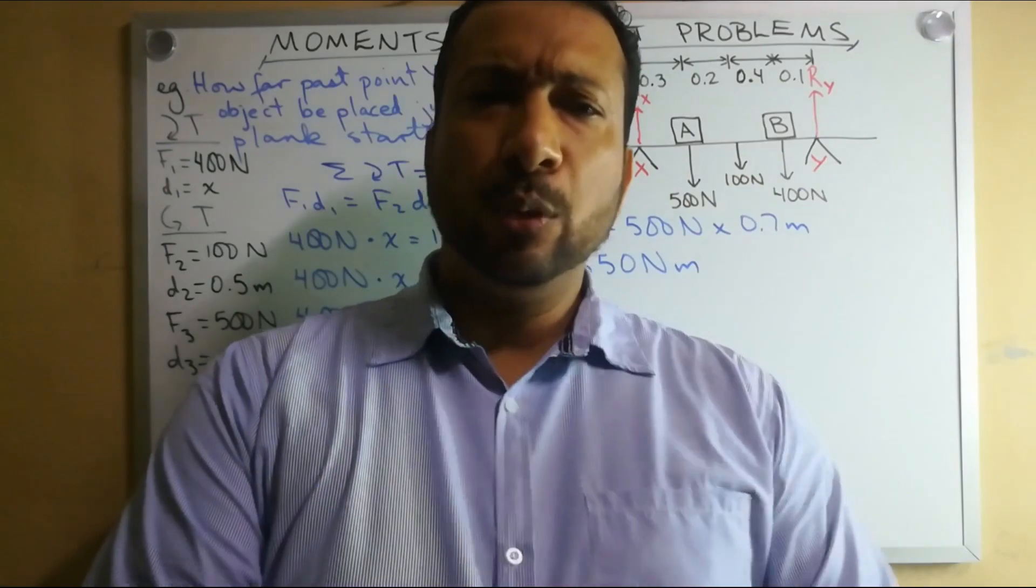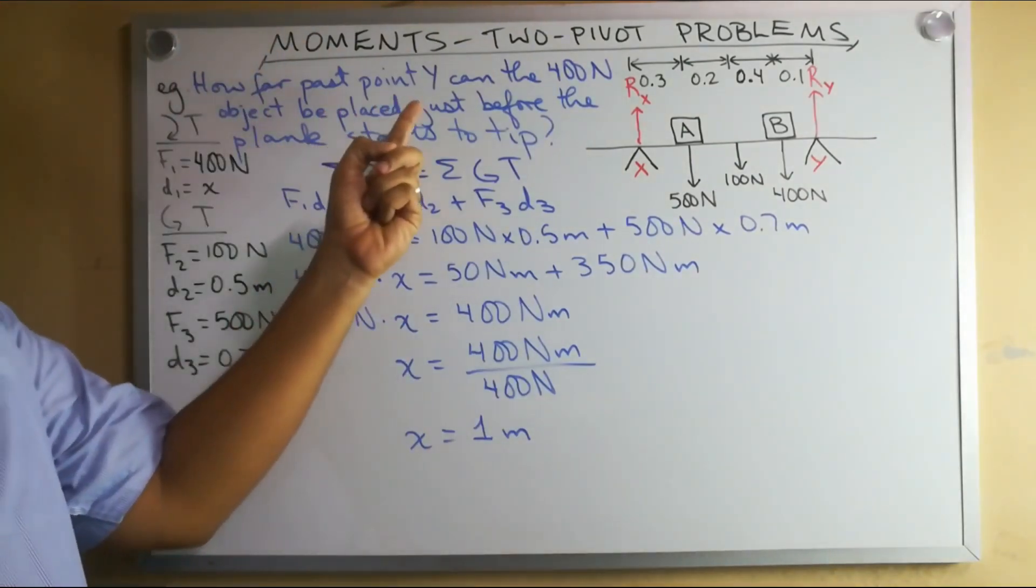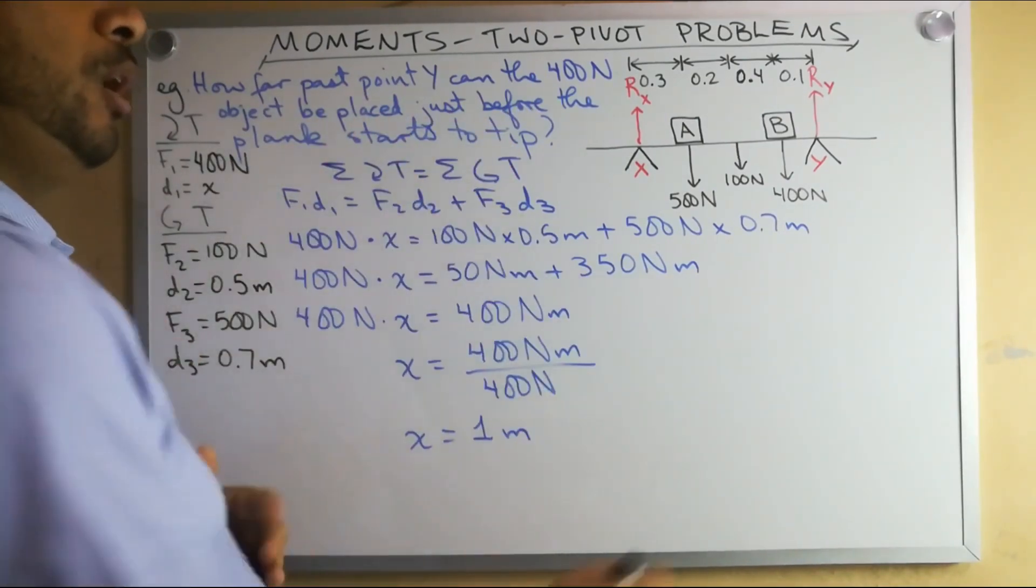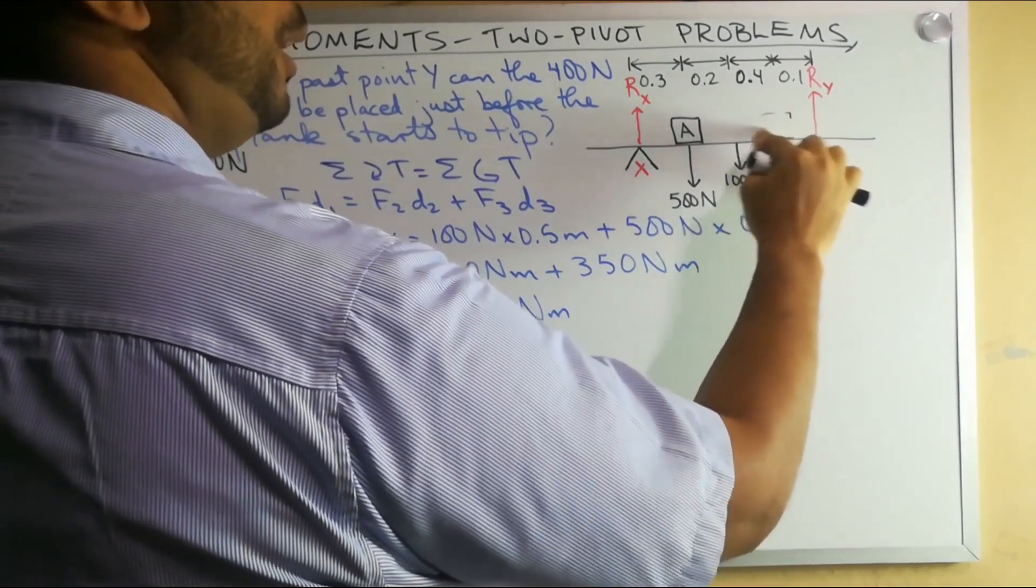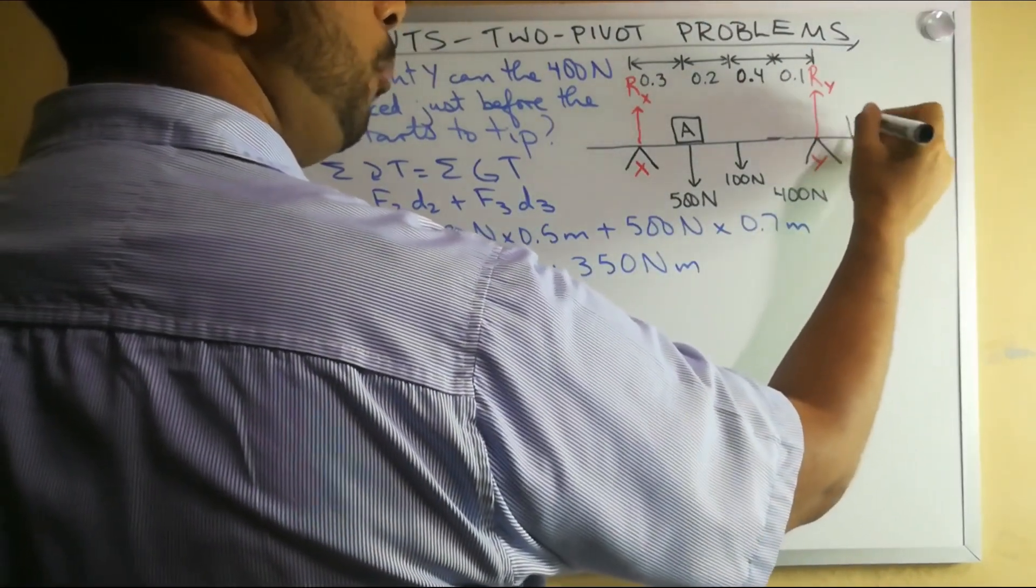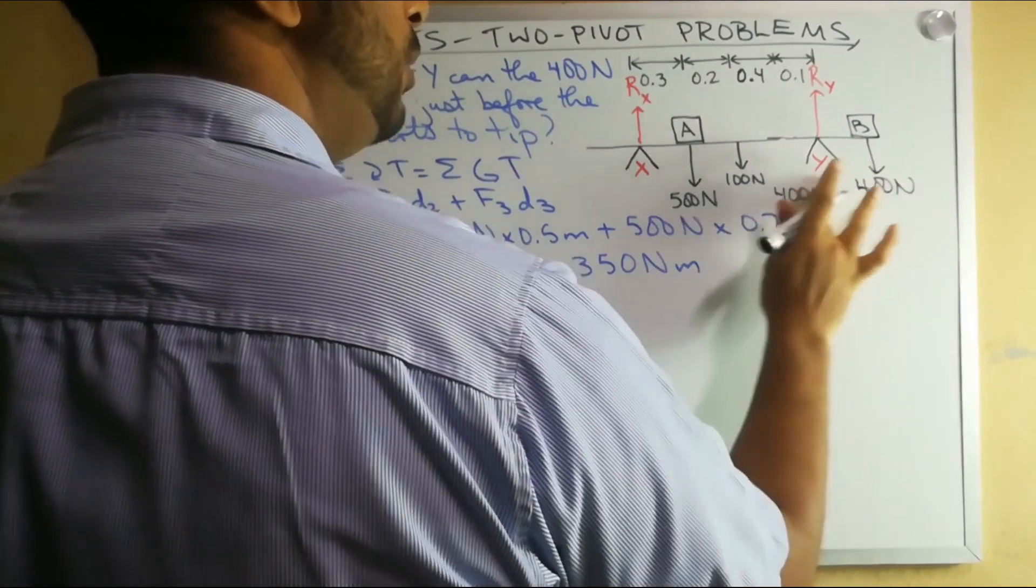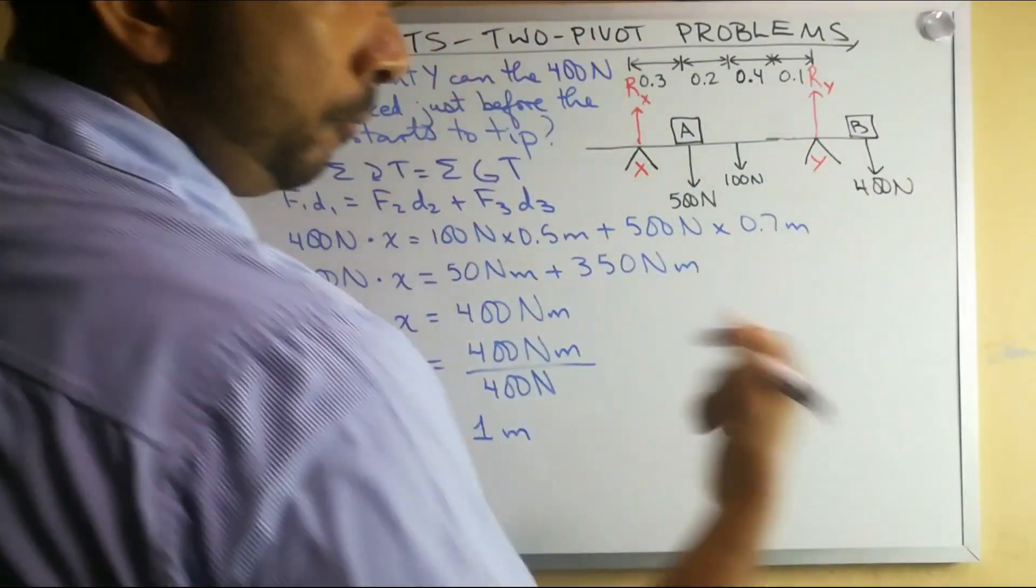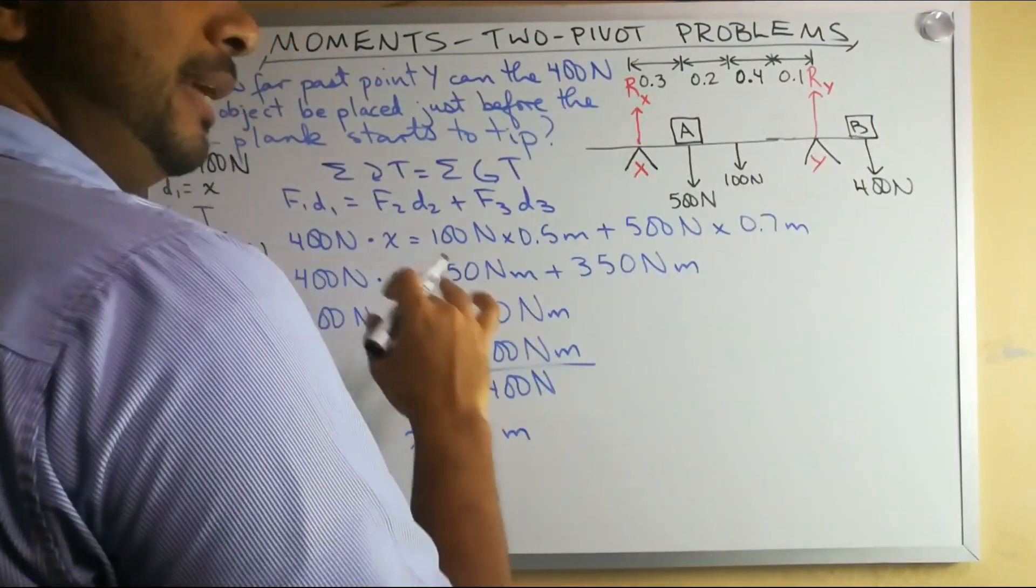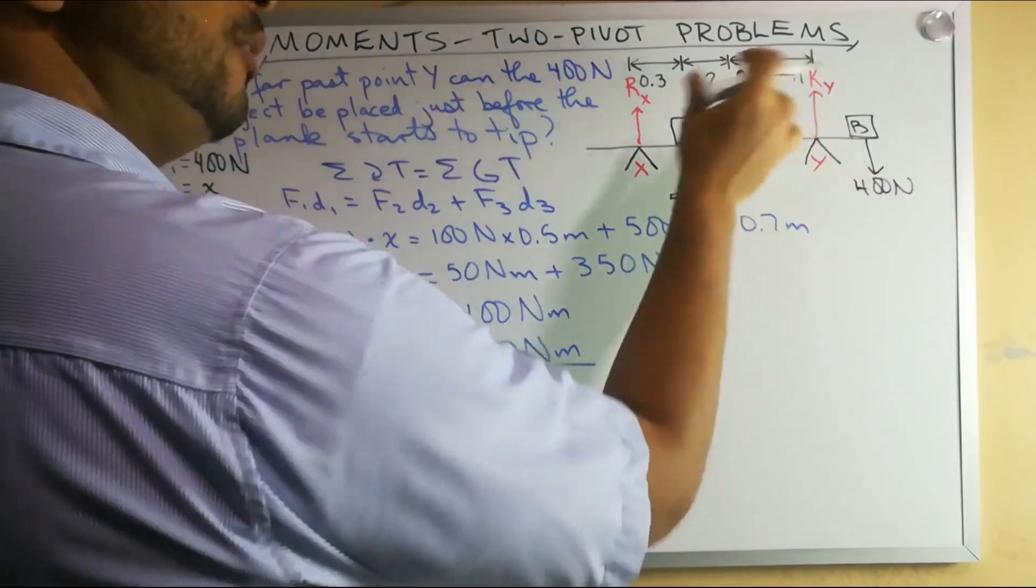So now we come to another part of this question. Let's say we ask a different scenario. How far past point Y can the 400 Newtons object be placed just before the plank starts to tip? In this scenario now, the object B is no longer here in between points X and Y. We have now taken it and removed it and put it to the right of point Y. We don't know how far it is. We want to know how far it can go just before this plank will start to tip over.